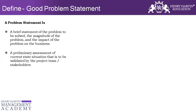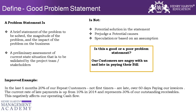Now let's take an example. In the last six months, this is the problem statement: '20% of our repeat customers — not first-timers — are late over 60 days in paying our invoices. The current rate of late payment is up from 10% in 2014 and represents 30% of our outstanding receivables. This negatively affects our operating cash.' Does this problem statement pass the 4W1H test?